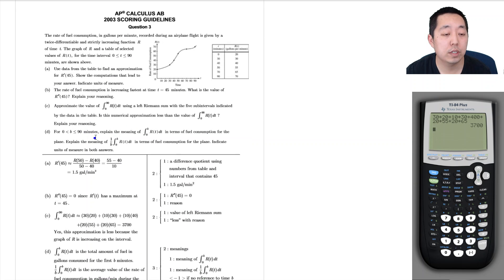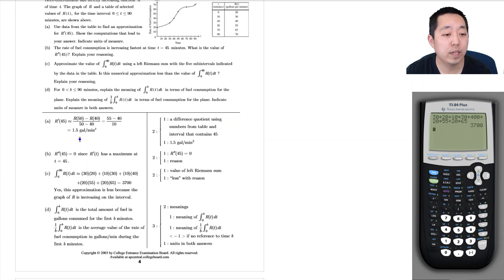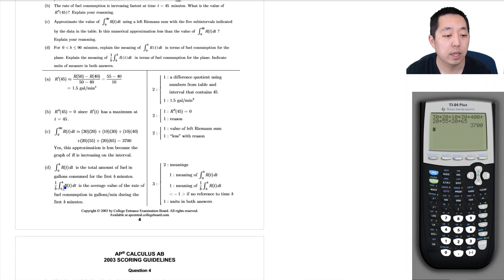Let's look at the answers. 1.5 gallon per minute squared. Zero, since r' of t is a maximum. This approximation is less because the graph of r is increasing on the interval. We said that. And this is the total amount of fuel consumed for the first b minutes, and this is the average value of the rate of fuel consumption during the first b minutes. So hope you found that helpful, I'll see you in the next video.